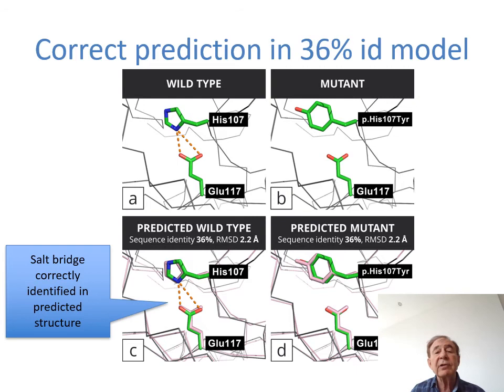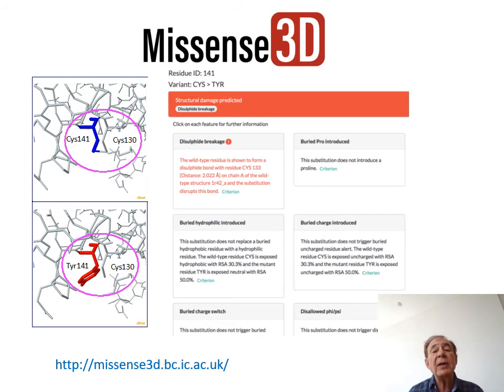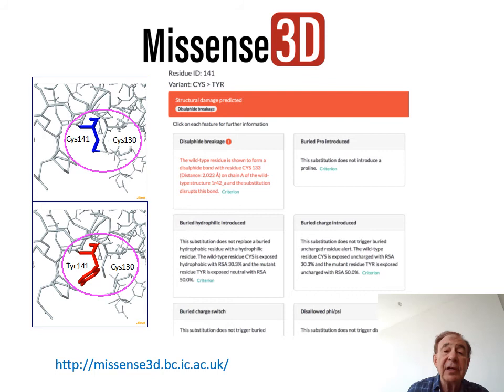For example, here we see the impact on a model built on 36% identity. This is the wild type and this is the variant — here is the predicted structure, and you can see the salt bridges correctly identified and the deleterious variant correctly identified. We've developed a server, Missense3D, where you can either put in a UniProt sequence or your own coordinates — you don't have to use a PHIRE model, you could put in any predicted structure. It will give you representations of the wild type and the variant and provide a report, for example highlighting that the wild type result breaks a disulfide bridge.